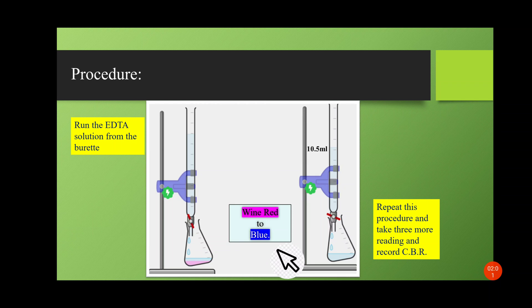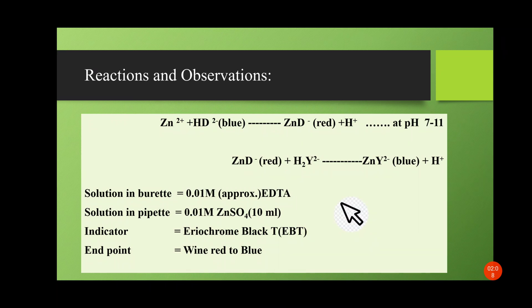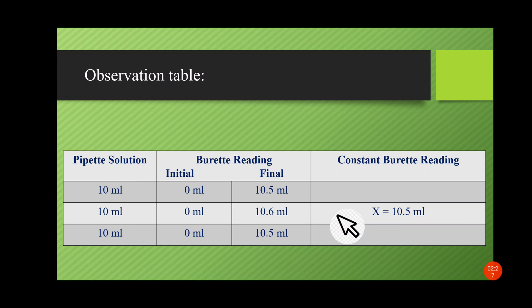Repeat the same procedure and take three more readings to get a constant burette reading. The reaction shows how the indicator changes color. The solution in the burette is 0.1 molar approximate EDTA; in the pipette is 0.1 molar zinc sulfate (10 ml taken). Indicator is Eriochrome Black T; end point is wine red to blue. From the observation table, the constant burette reading obtained is 10.5 ml.